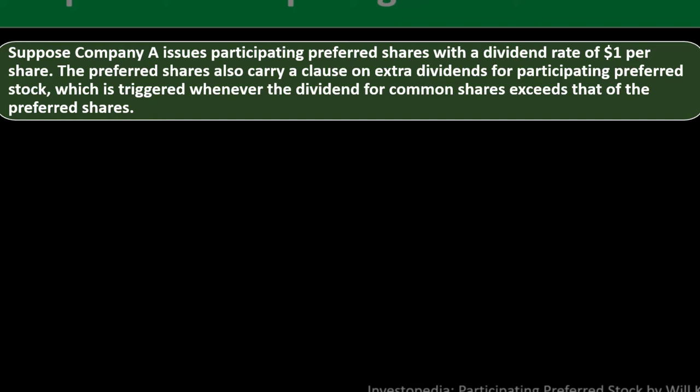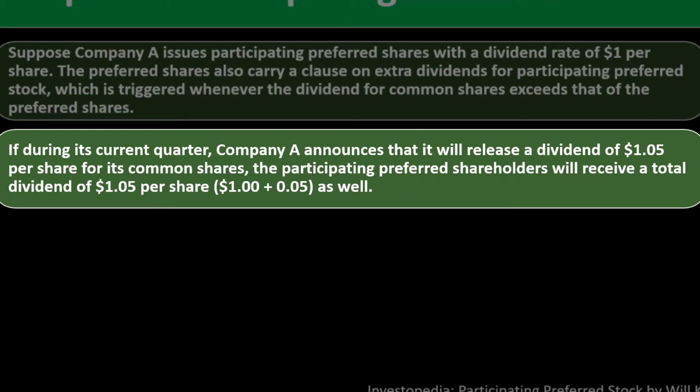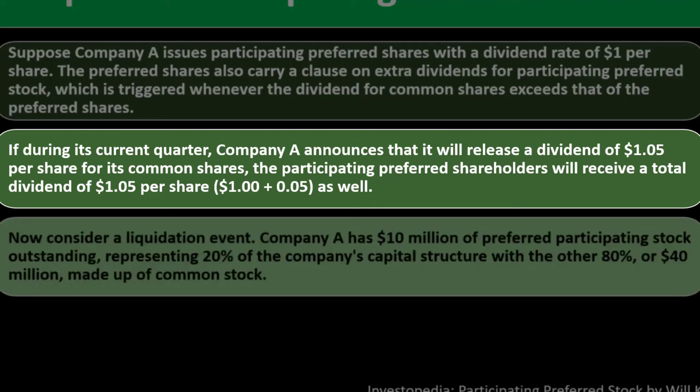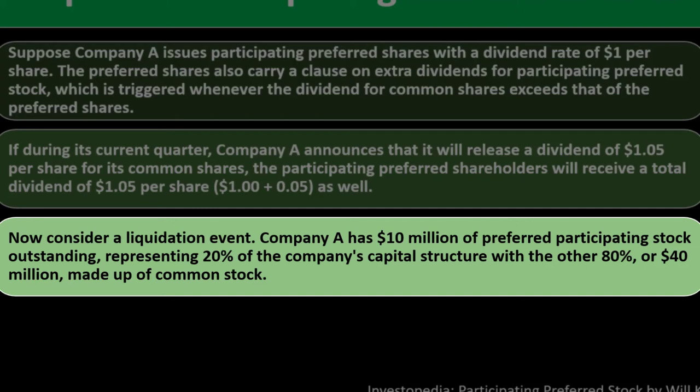For an example of participating preferred stock: suppose Company A issues participating preferred shares with a dividend rate of $1.00 per share. The preferred shares also carry a clause on extra dividends for participating preferred stock, which is triggered whenever the dividend for common shares exceeds that of the preferred shares. So if during its current quarter Company A announces a dividend of $1.05 per share for its common shares, the participating preferred shareholders will also receive a total dividend of $1.05 per share — the $1.00 plus the additional $0.05.